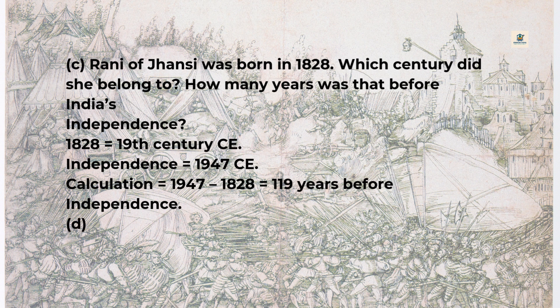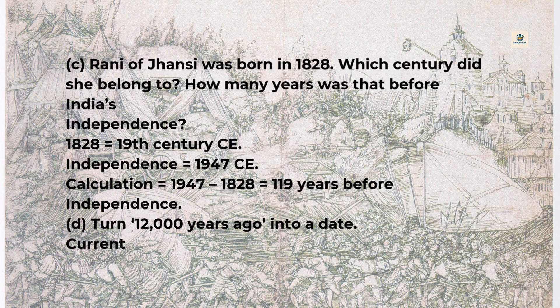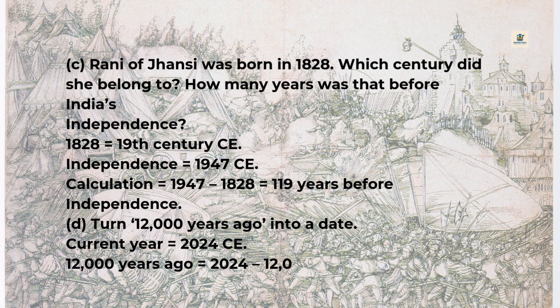D — Turn 12,000 years ago into a date. Current year is 2024 CE. 12,000 years ago equals 2024 − 12,000 = approximately 9,976 BCE.